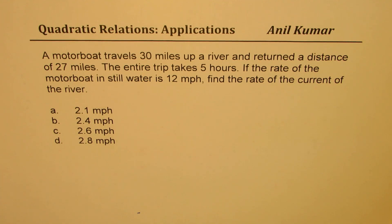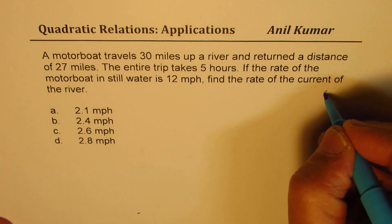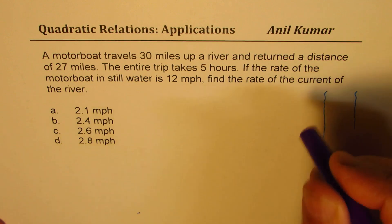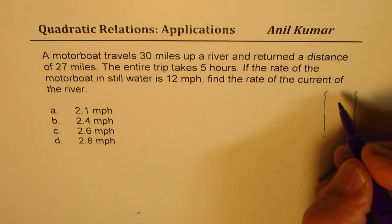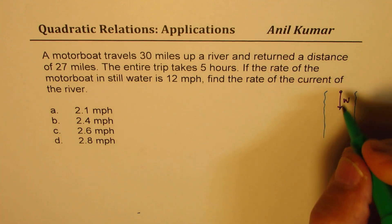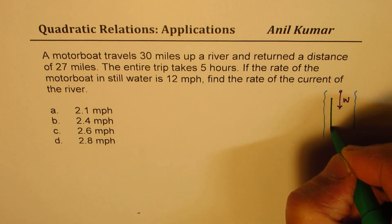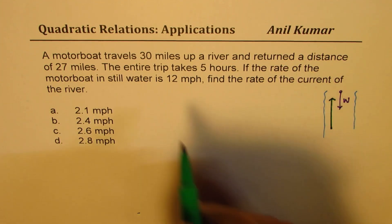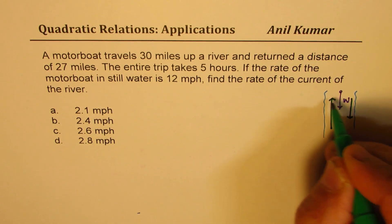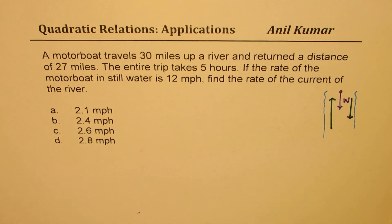So let's try to understand the situation. Let's say that's the river and here the water is flowing at some rate. So the motorboat actually goes up, let's say 30 miles, but it returns only 27 miles. That is the situation given to us.